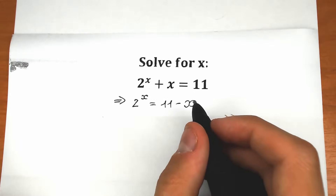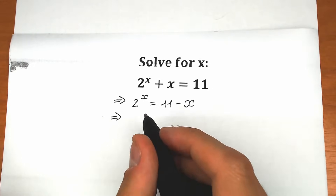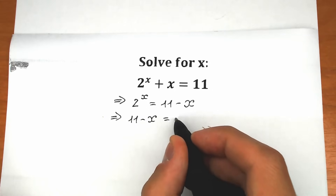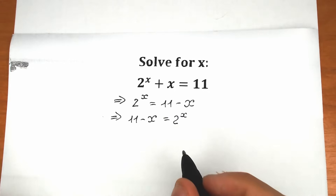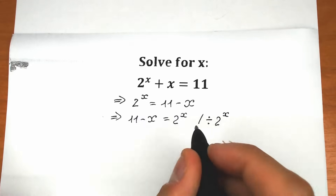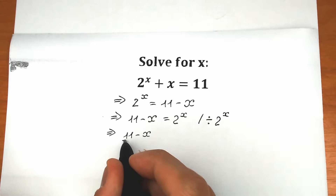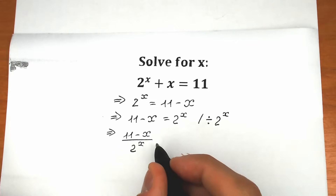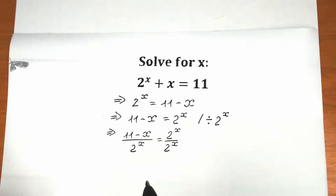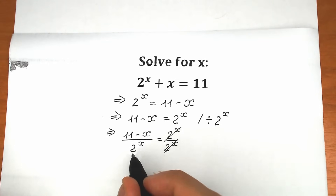What are we going to do next? Let's divide both sides by 2 to the power x. We change position — 11 minus x on the left side and 2 to the power x on the right side. It changed nothing. Right now let's divide both sides by 2 to the power x. We write it in our denominator, so we have 11 minus x divided by 2 to the power x, and 2 to the power x divided by 2 to the power x gives us 1, so we can easily cancel this 2 to the power x.